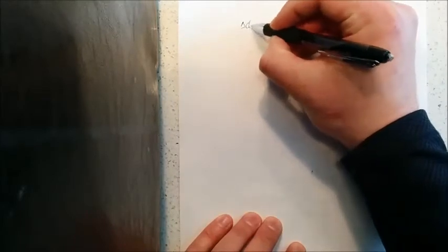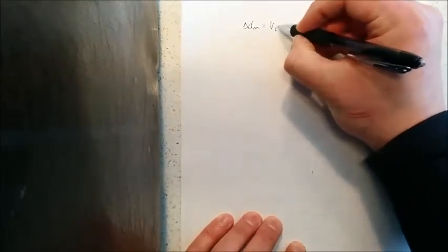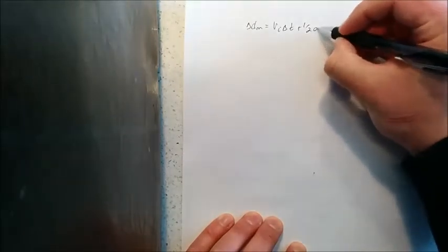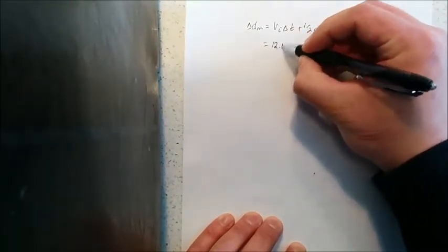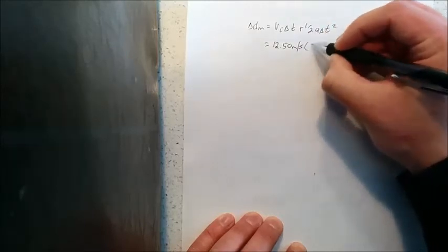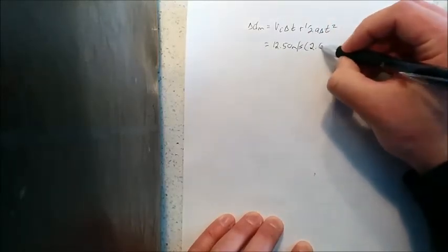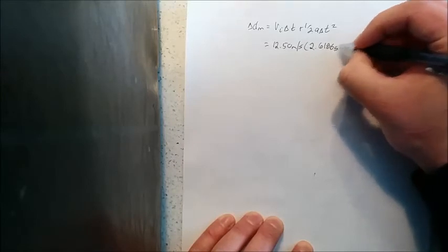So the distance of motorcycle traveled is what I had stated: Vi∆t plus 1/2 a∆t squared. I plug that stuff in. 12.50 meters per second initial speed, time frame 2.6186. I'll use all sig figs here because it's part of this problem.